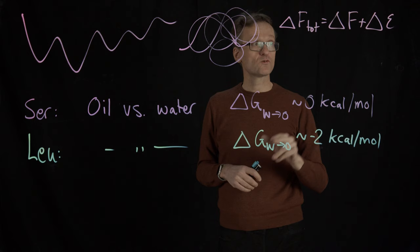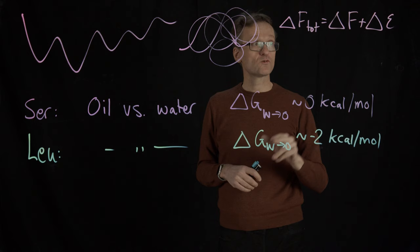And of course that means that if I use leucine here, I could afford to have delta F be two kcal worse.